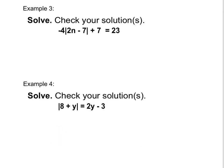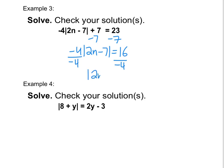In this next example, my first step is to isolate the absolute value bar. So I get negative 4 times the absolute value of 2n minus 7 equals 16. When I divide by the number on the outside, just as if this were parentheses, I have that my entire absolute value equals negative 4. Right away, I know that I cannot have a distance that's negative, and therefore this is no solution.